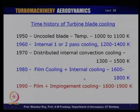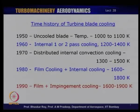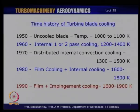Then impingement cooling matured — an idea which has been around for nearly 50 years. Micro channel cooling methodology, the science of which is well known, but the technology is not quite available as of today. The porous material that can withstand stresses in a turbine blade has also not quite matured. So the turbine technology has matured hugely over 50 years and has resulted in engines that are more powerful and smaller in size.